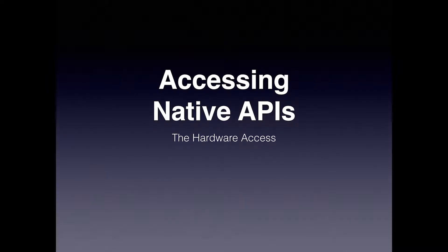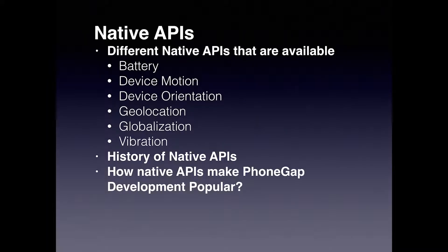In this section we are going to talk about accessing native APIs. Native APIs are the essence of hardware access of any device and any platform. We will be covering different native APIs that are available on most of the supported platforms. We will cover the following sensors: accelerometer, compass, and geolocation.